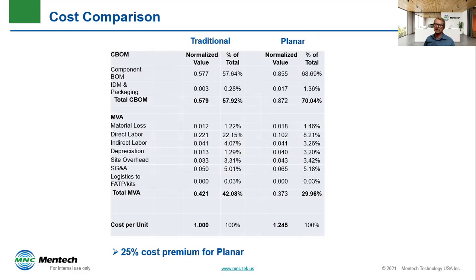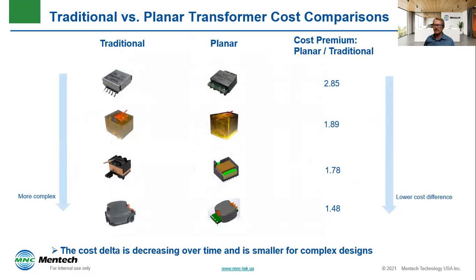Component costs should decrease over time as volumes increase. We have detailed analyses of bill of materials and manufacturing costs for these, but it's somewhat proprietary, so we are only showing the cost delta. Basically, that delta is smaller for more complex designs and expected to decrease over time as planar volumes increase.